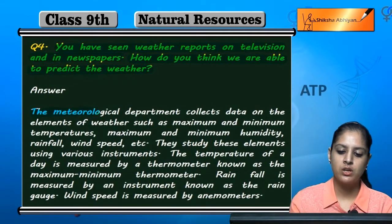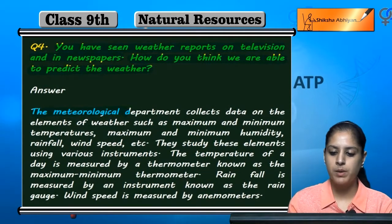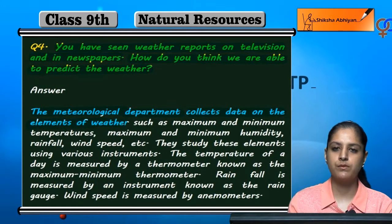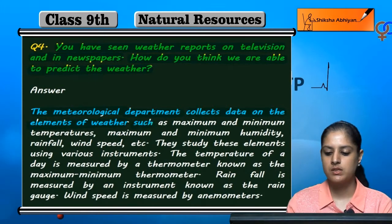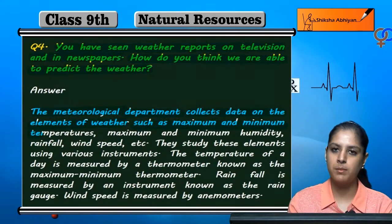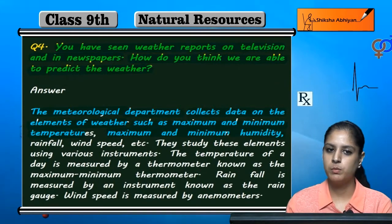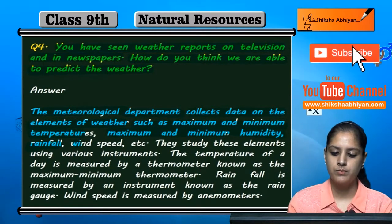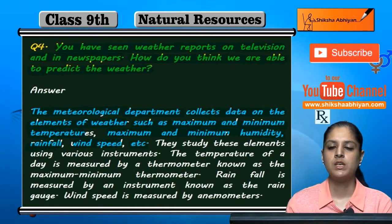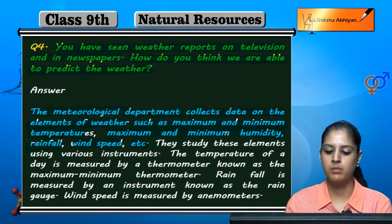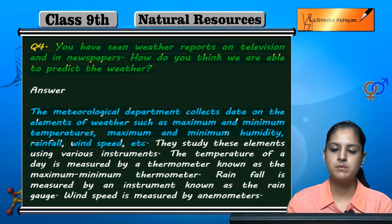The meteorological department collects data on the elements of weather such as maximum and minimum temperature, maximum and minimum humidity, rainfall, and wind speed. These factors are the elements of weather: temperature (maximum and minimum), rainfall, humidity (maximum and minimum), and wind speed.